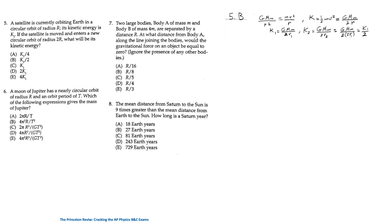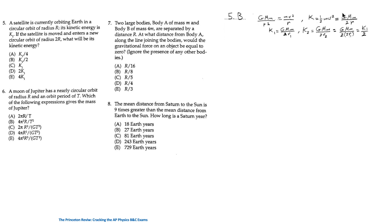For question 5: a satellite orbits Earth in a circular orbit of radius r with kinetic energy K1. The gravitational force provides the centripetal force for circular orbit. Multiplying both sides by one-half gives kinetic energy = G·M·m / 2r. If the orbit radius increases to 2r, the new kinetic energy K2 = K1 / 2. The answer is B.